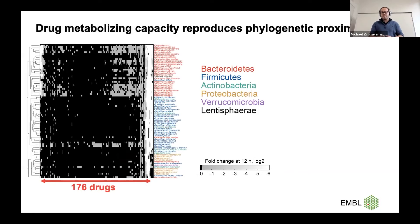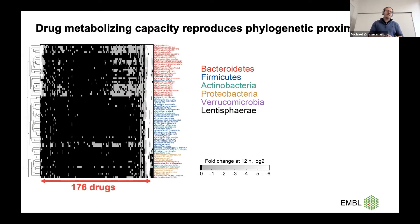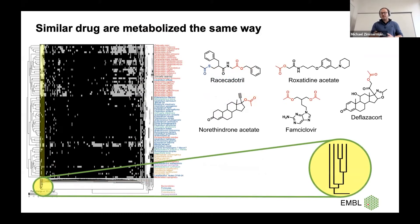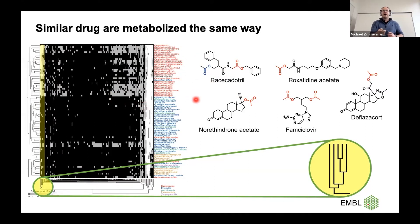If we use hierarchical clustering on this data, we find that the bacterial species cluster according to their phylogenetic relationship, which tells us that genetic information matters for the metabolic capacity of those bacteria. If we then do clustering of the drugs, we find that drugs metabolized by similar bacteria — shown here, a group specifically metabolized by the Bacteroidetes phylum — they all actually contain ester groups, which are probably hydrolyzed by the bacteria.